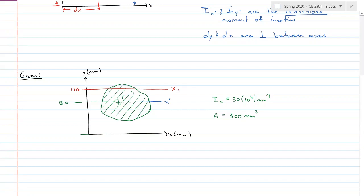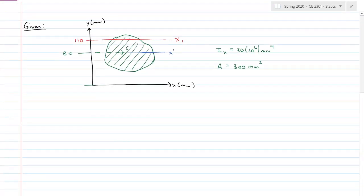I have two axes. I have a centroidal axis, X prime, at 80 millimeters, and another axis, X one, at 110 millimeters. I want to find the moment of inertia about the X one axis.